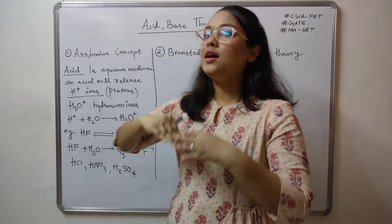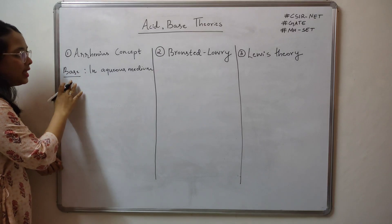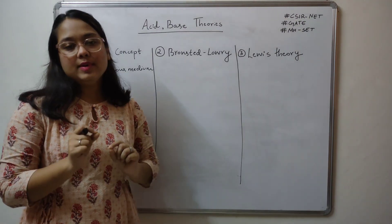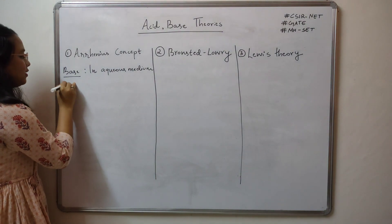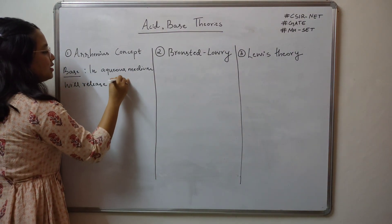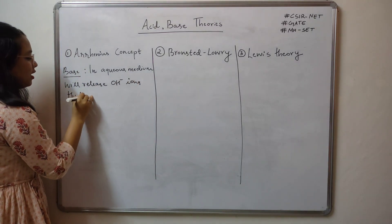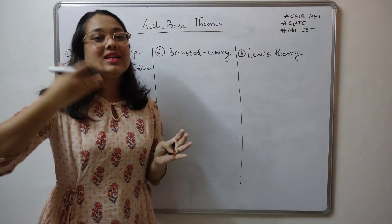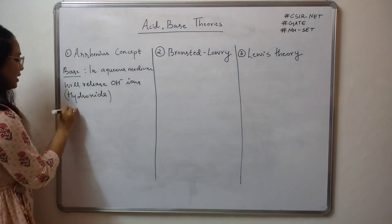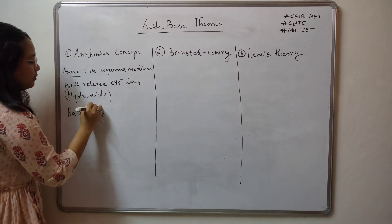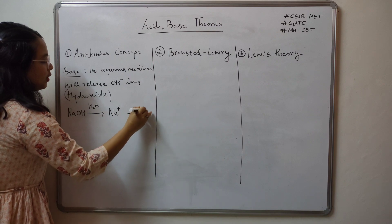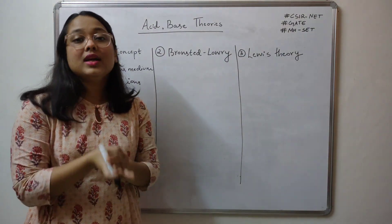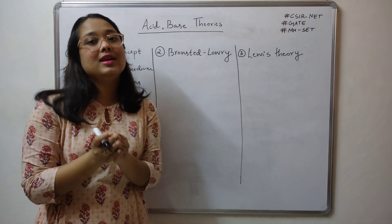Now let us look at the Arrhenius concept definition of a base. Again the condition remains the same — in an aqueous medium. Arrhenius said that if you have a base and dissolve it in water, a base will release OH minus ions, which are your hydroxide ions. A base when dissolved in water will dissociate in such a way that it will increase the overall concentration of hydroxide ions. A simple example: NaOH, sodium hydroxide. When you add it in water it will split into Na+ plus OH minus.